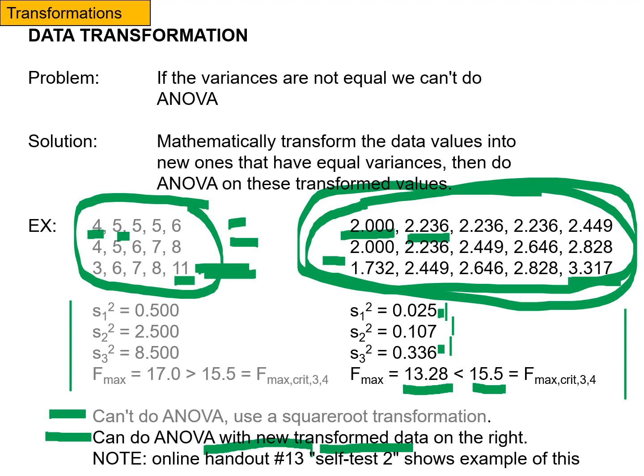I created data sets that actually failed the initial Fmax test. So they had to be transformed and then Fmax tested again before they would pass and then be able to continue for the rest of the ANOVA.